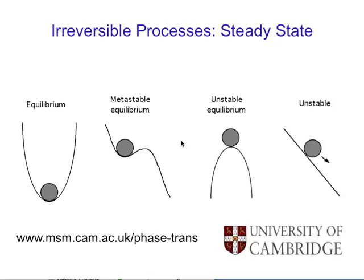The first slide shows different states of equilibrium. In stable mechanical equilibrium, an infinitesimal perturbation causes the ball to return to its original position. Metastable equilibrium also has this property, but with another lower free energy minimum elsewhere. Unstable equilibrium means a perturbation causes it to cascade to a lower free energy state.